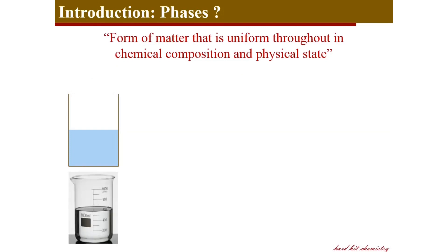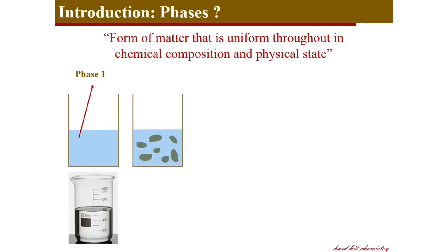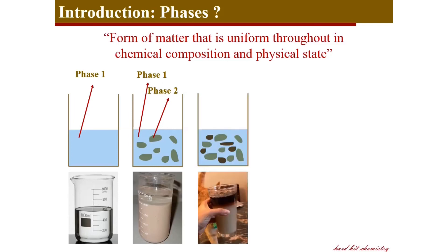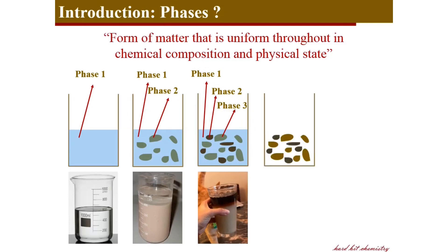Consider this beaker full of water — here you have one phase of water. Now consider a mud suspension: the liquid forms the first phase and the suspended solid forms the second phase. In a third example, you have two different solids suspended in water, so the water forms the first phase and the two different solids separately form individual phases. And a mixture of two different solids like salt and pepper gives a phase of salt and another phase of pepper.